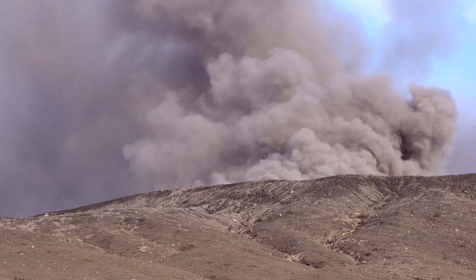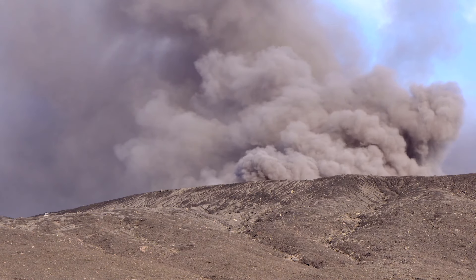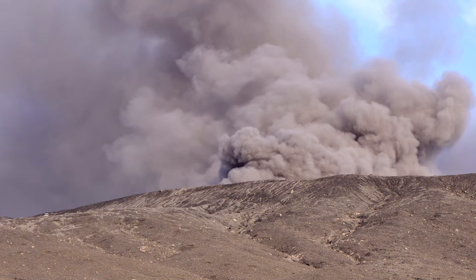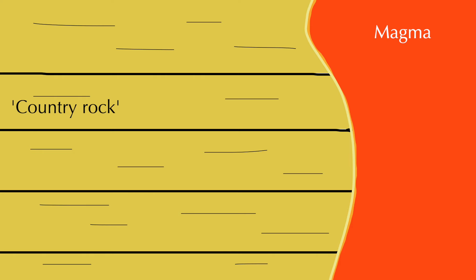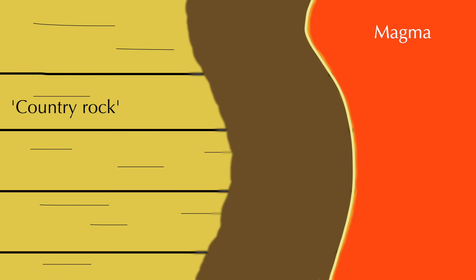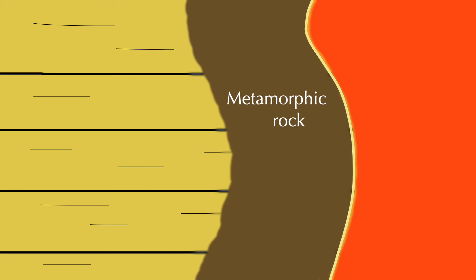Contact metamorphism involves magma and the intense heat it generates. Magma is molten rock that rises up through the Earth's crust from below. If it rises high enough, it may break through the surface in a volcanic eruption. Along the way, magma has to push its way through pre-existing layers of rock, which we call country rock for convenience. Country rock surrounding the magma is exposed to temperatures that may be well over 1000 degrees Celsius — it is essentially baked, like a cake. This dramatic increase in temperature forces the minerals inside to adjust, which of course creates metamorphic rocks.